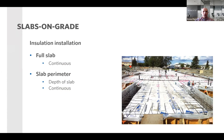There are also changes to slab-on-grade insulation installation requirements, which are now broken into two categories: full slab and slab perimeter. The full slab shall have continuous insulation under the entire area except at structural column locations or service penetrations. For the heated slab perimeter, insulation is no longer required to extend below the bottom of the heated slab — it now just needs to be the depth of the slab.